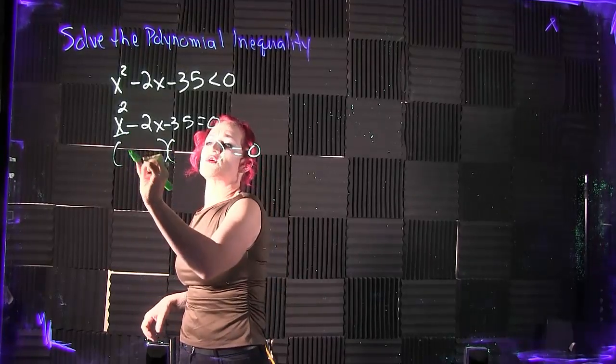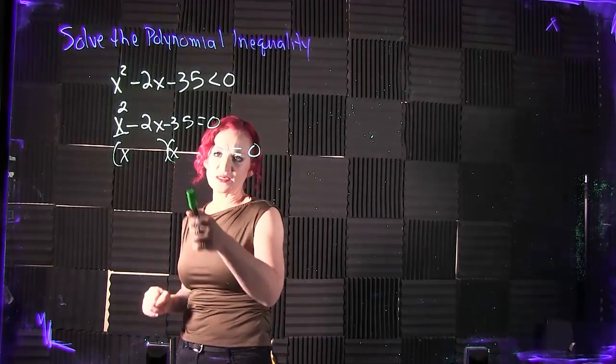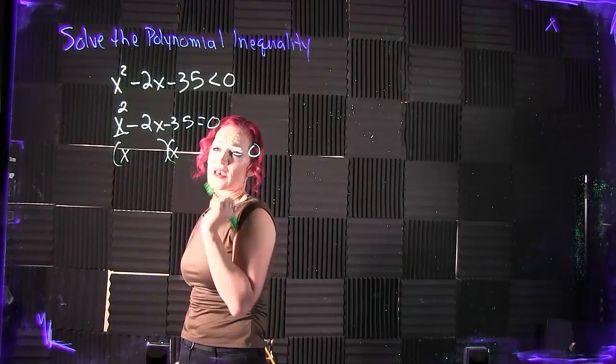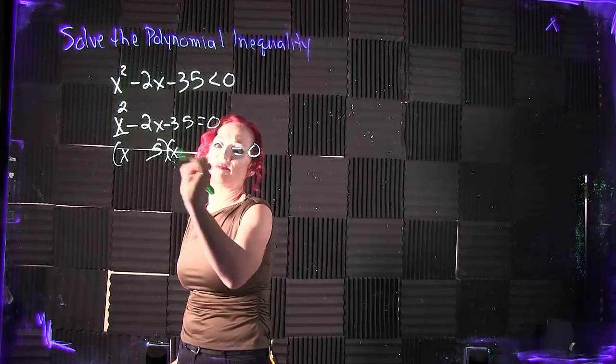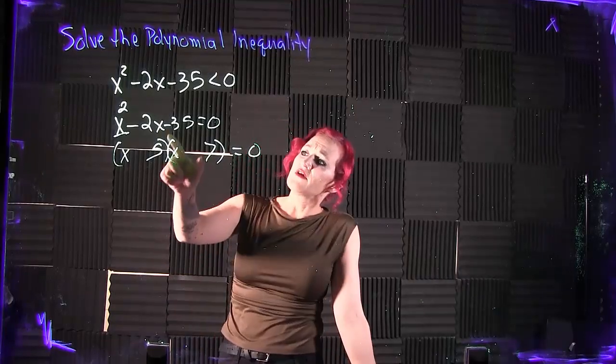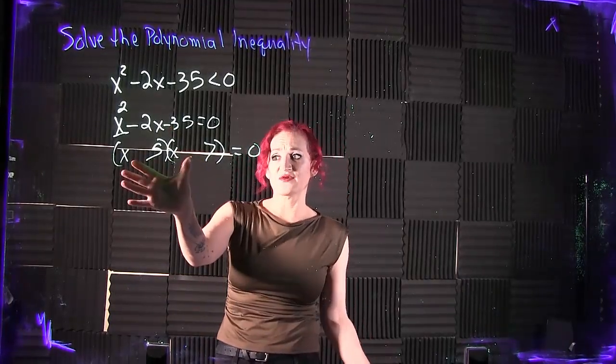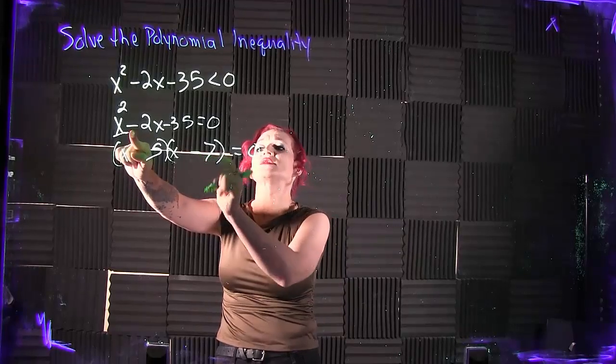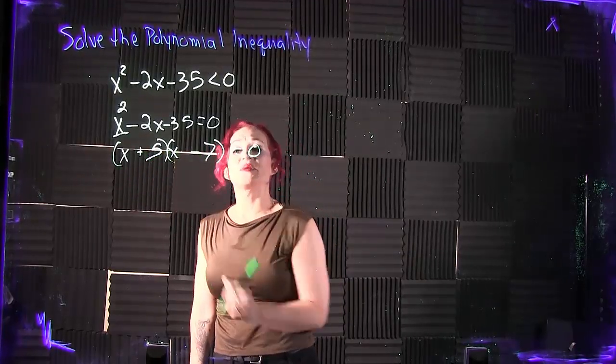Factoring this, I know that x squared tells me x times x. Factors of 35 that add or subtract to get a 2 is going to be 5 times 7. If the back number is negative, that tells us that these need to be different signs. Middle term always goes with a bigger number, so that means a plus needs to go with a 5.